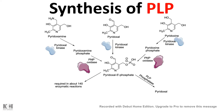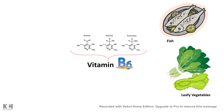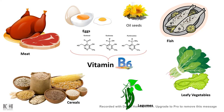From pyridoxamine, pyridoxal, and pyridoxine, the first step is to phosphorylate these compounds using pyridoxal kinase. After phosphorylation, the enzyme PNP oxidase oxidizes these compounds to pyridoxal 5-phosphate. This PLP serves as a coenzyme for more than 140 enzymatic reactions. Vitamin B6 can be obtained from fish, leafy vegetables, legumes, cereals, meat, eggs, and oil-rich seeds like sunflower seeds.